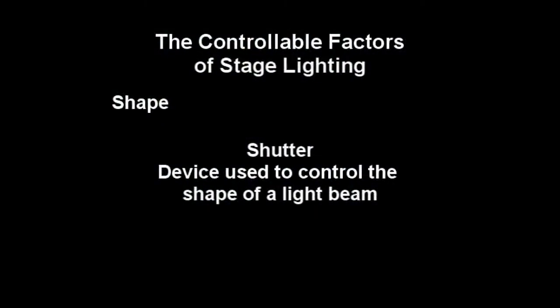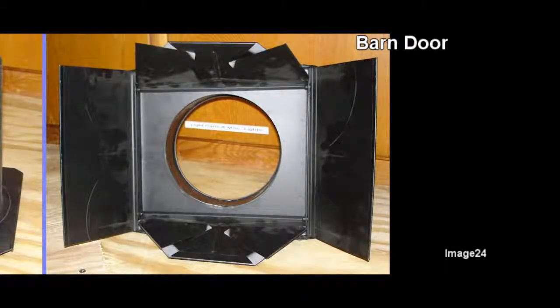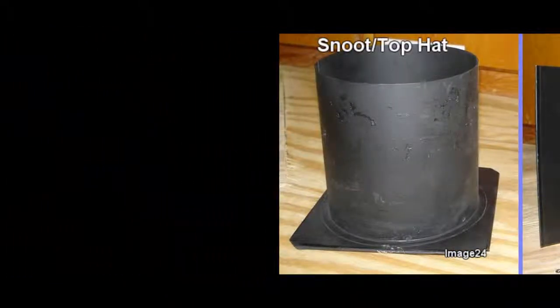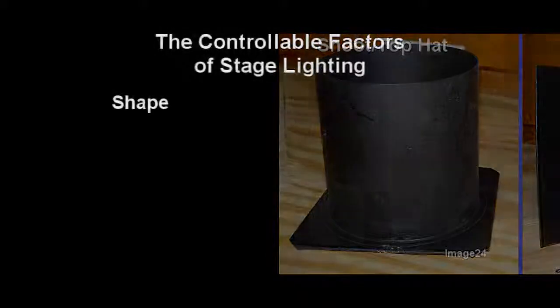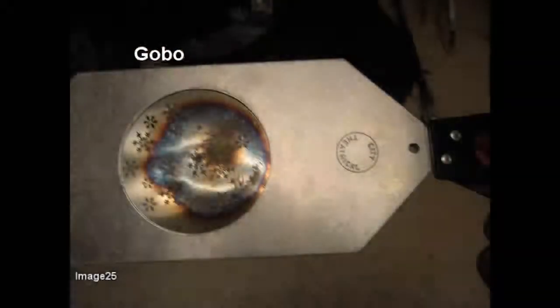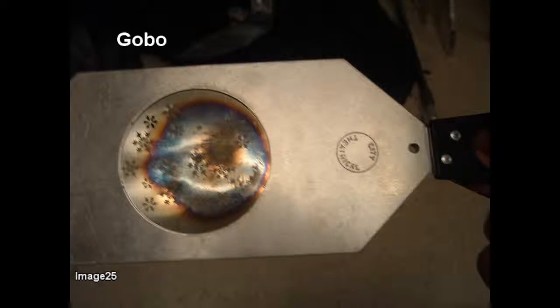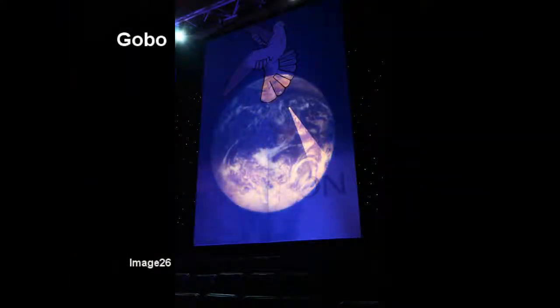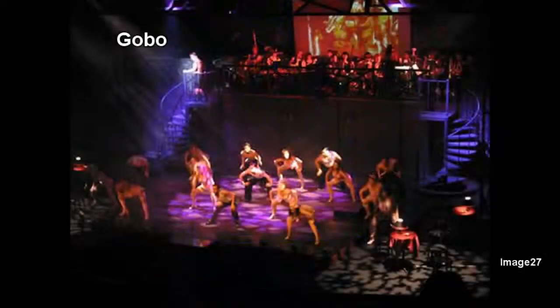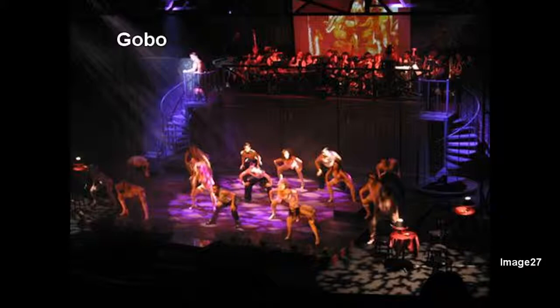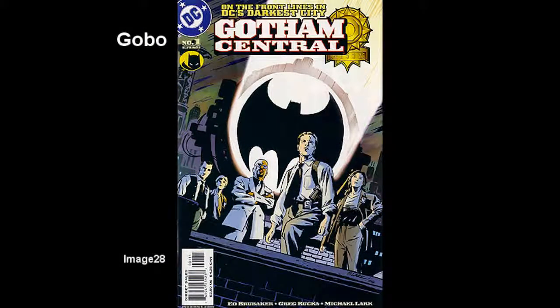There are other shutters in stage lighting. One of the most common is the barn door — a device that may be placed in the gel frame of a light instrument and then manipulated to control the shape of the light. Another device used to control the shape of a light is referred to as a snoot or a top hat, for obvious reasons. Perhaps the device most used for aesthetic purposes is referred to as a gobo. The gobo is often made of sheet metal with a pattern cut into it. By controlling the shape in this way, a designer can create a starry night on a cyclorama, or create a sense of texture on a surface. The most familiar use of the gobo is in Batman comics, where the bat signal is used to summon the superhero.